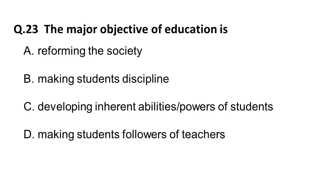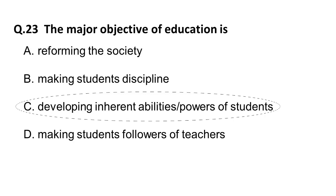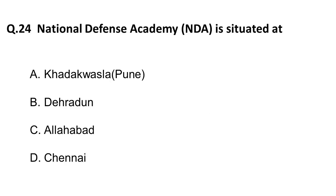The next question: the major objective of education is — option A is reforming the society, option B is making students disciplined, option C is developing inherent abilities and powers of students, option D is making students followers of the teacher. The correct answer is C — developing the inherent abilities and powers of students.